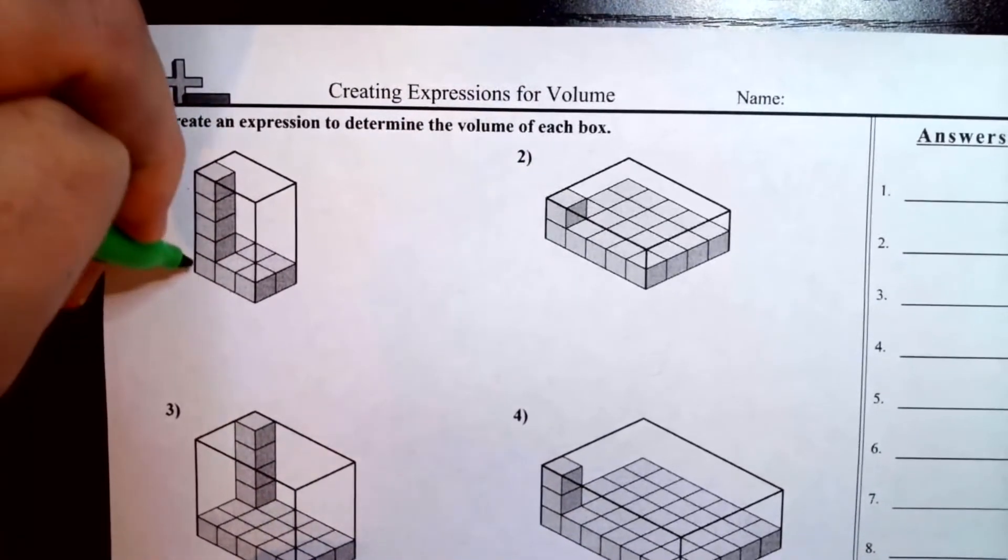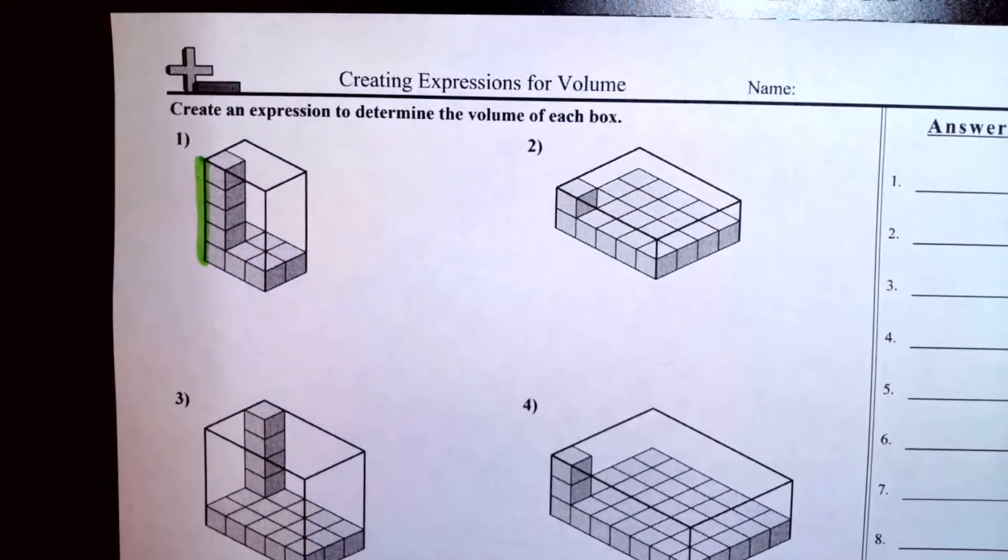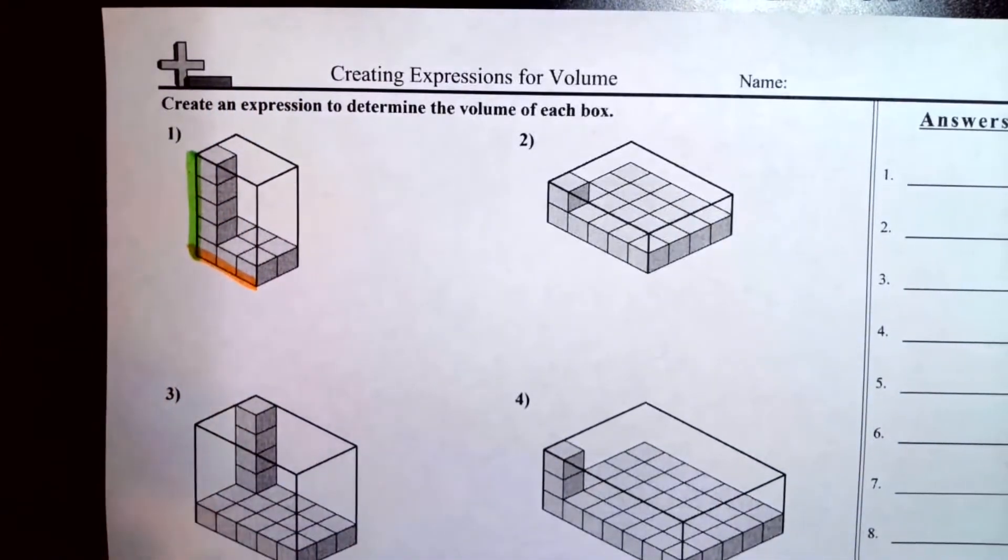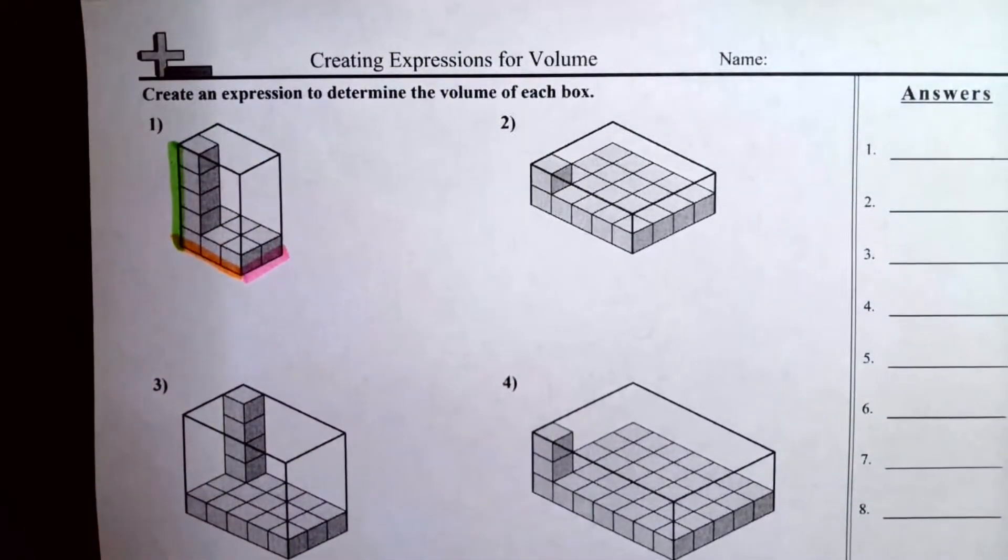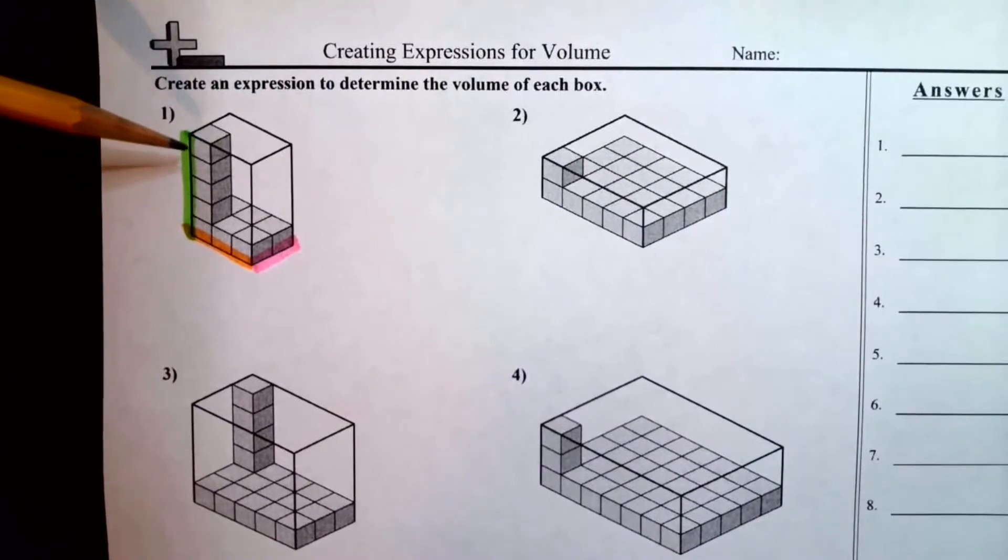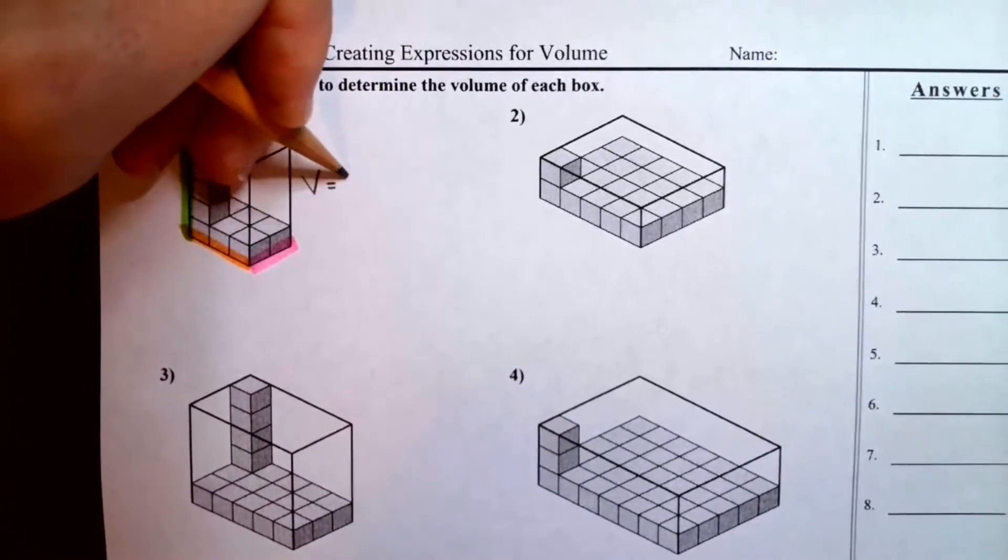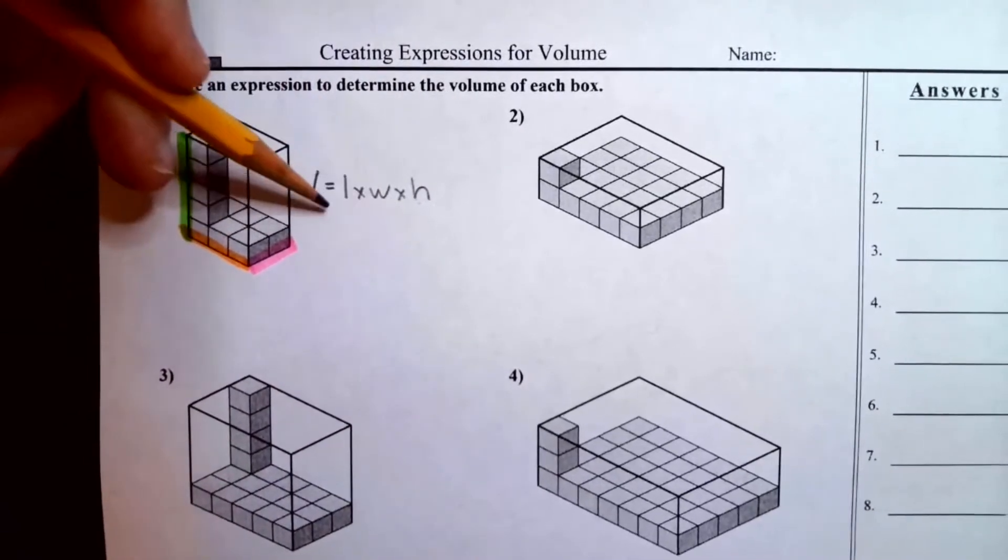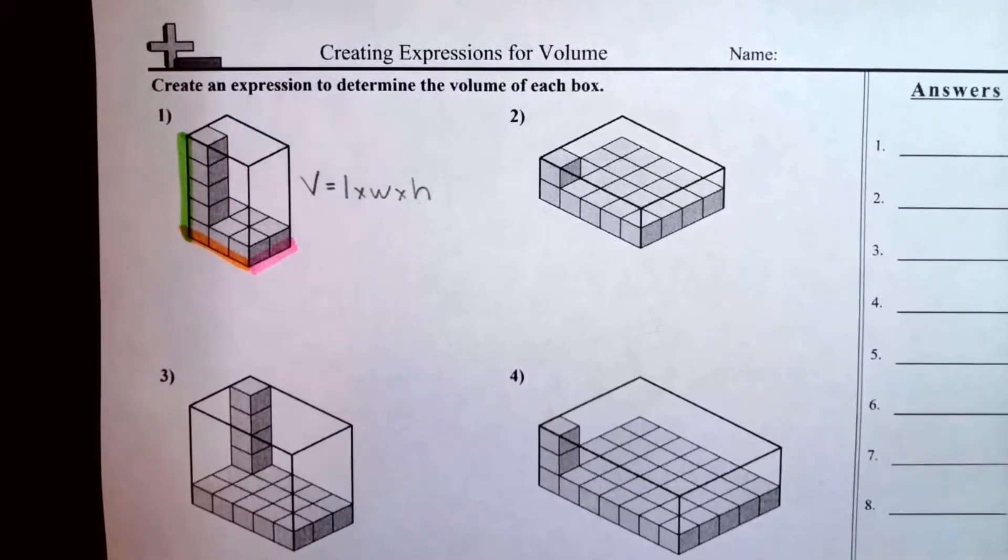So on number one we can get the height right there and I'll use a different color for length and a different color for width. So now remember when we're doing a volume of a three-dimensional figure or a rectangular prism there's a formula and the formula is that volume equals length times width times height. And that's how we're going to use this formula to write an expression. We're not actually going to find the answers to this. We're not going to figure out what the actual volume of each prism is. We're just going to write an expression.